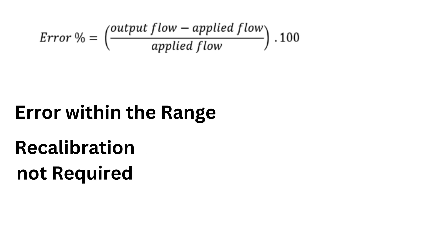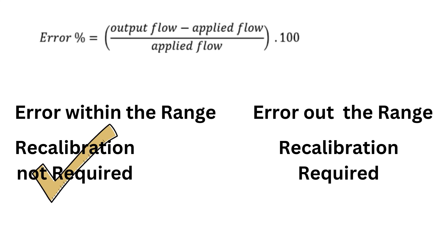Now calculate the error percent from the flow values we got with the next formula. If the calculated errors are all well within the required accuracy for the application, then the DP type flow transmitter is okay and should not be recalibrated. If the error obtained from the calculations is more than the required accuracy for the application, then a calibration of the DP flow transmitter is needed.